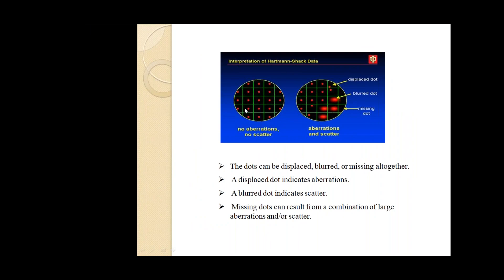In the interpretation of Hartmann-Shack data, regular dots indicate no aberration or scattering. Displaced spots indicate aberration, blurred spots indicate scattering, and missing spots result from a combination of large aberration or scatter. So a dot can be displaced, blurred, or missing altogether. The displaced dot indicates aberration, the blurred dot indicates scattering, and the missing dot results from combined large aberration or scatter.